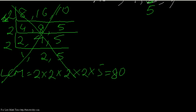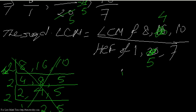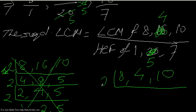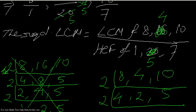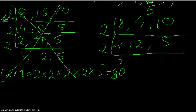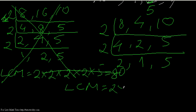So I find the LCM of 8, 4, and 10. Starting with 2: 2 fours are 8, 2 twos are 4, 5 twos are 10. Again by 2: 2 twos are 4, 2 ones are 2, and 5 remains. So the LCM is 2 times 2 times 2 times 5, which gives 2 twos are 4, 4 twos are 8, 8 fives are 40.